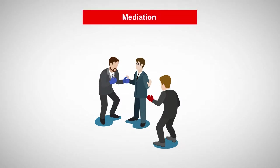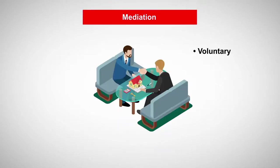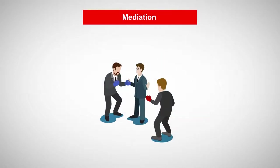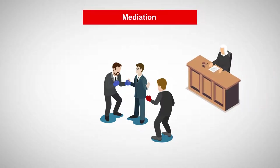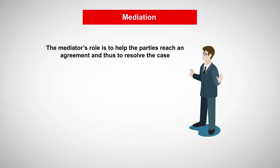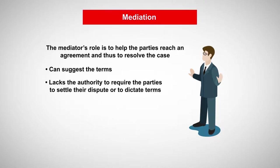A mediation is typically a voluntary process, though it can be required by a court. In a mediation, a third person, referred to as the mediator, tries to assist the parties in resolving their dispute. Oftentimes, a trial court judge will even order the parties to undertake mediation. The mediator's role is to help the parties reach an agreement. The mediator can suggest the terms under which the parties should settle the case. However, the mediator lacks the authority to require the parties to settle their dispute or to dictate terms.